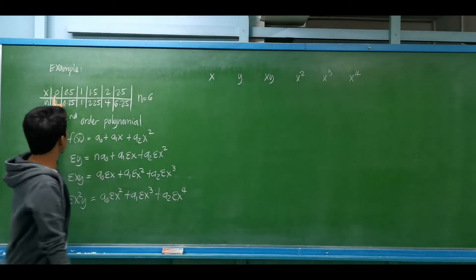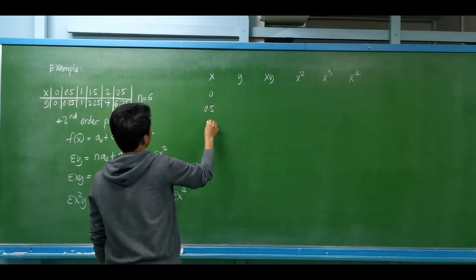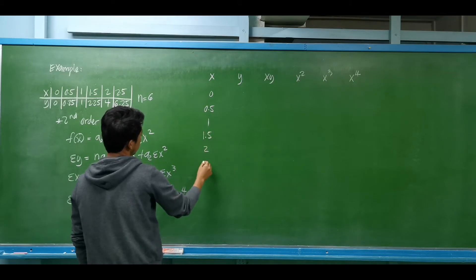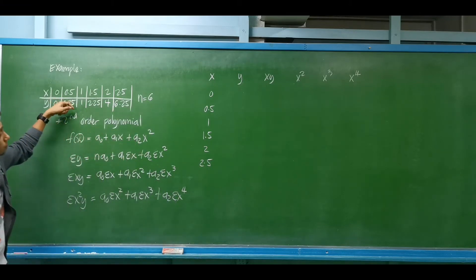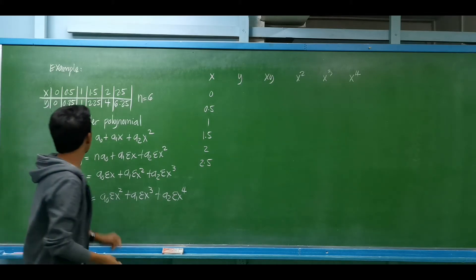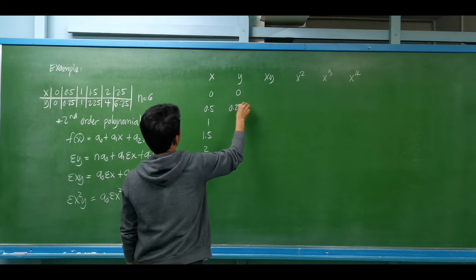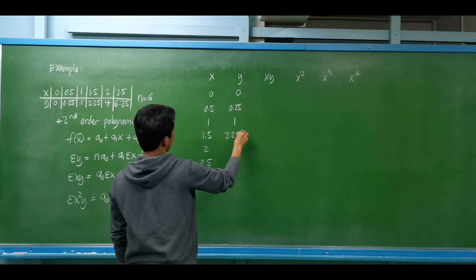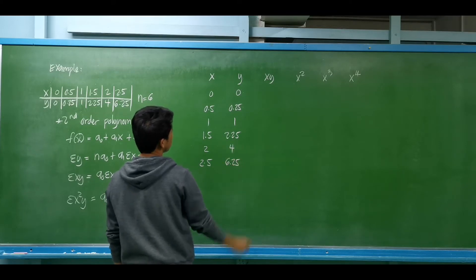We have six x-values: 0, 0.5, 1, 1.5, 2, and 2.5. The corresponding y-values are: 0, 0.25, 1, 2.25, 4, and 6.25.